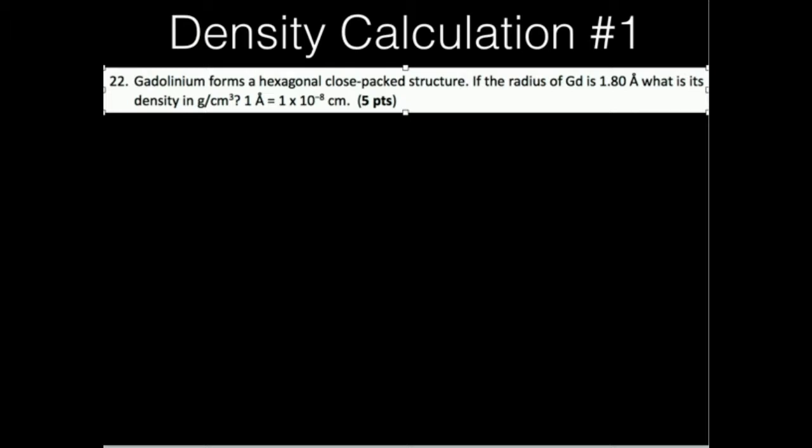So this is the problem: gadolinium forms a hexagonal close-packed structure. If the radius of GD is 1.8 angstroms, what is its density in grams per centimeters cubed?